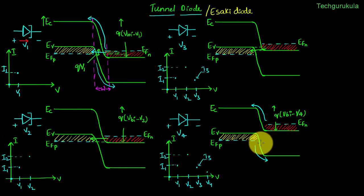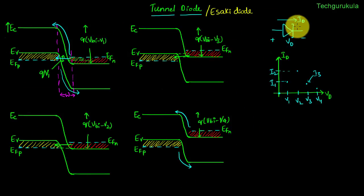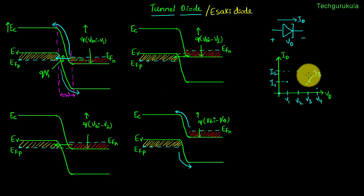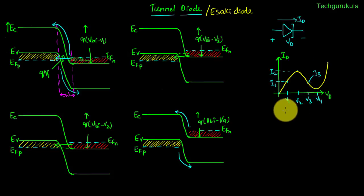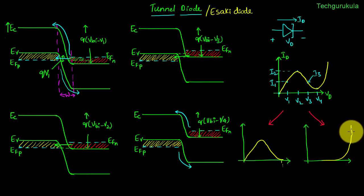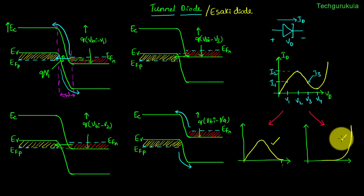Now let me draw the entire forward bias characteristics of the tunnel diode by combining all the points. The current versus voltage curve can be understood as the sum of two curves: the tunneling current, which dies down after some voltage, and the injection current, which kicks in after a certain voltage. Adding these two curves gives the total IV characteristic — this part indicating the tunneling current and this part indicating the normal conventional PN junction current.